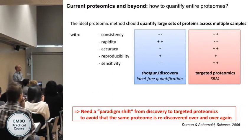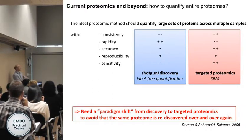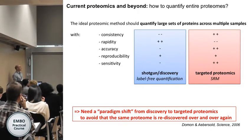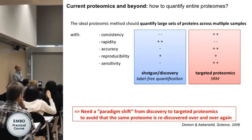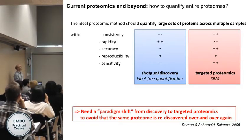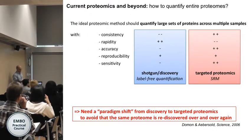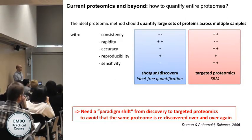With shotgun, you get quite a high number of protein identifications, but because of the stochastic sampling, you get quite low consistency in proteomics. You can recover some of that with MS1-based quantification and aligners, but reproducibility is still not as high as you wish. On the other side, there is the complementary technique — targeted proteomics like SRM — which gives very high consistency, accuracy, and sensitivity because you focus the machine on specific targets. However, you lack rapidity because you can only acquire as fast as your machine allows.